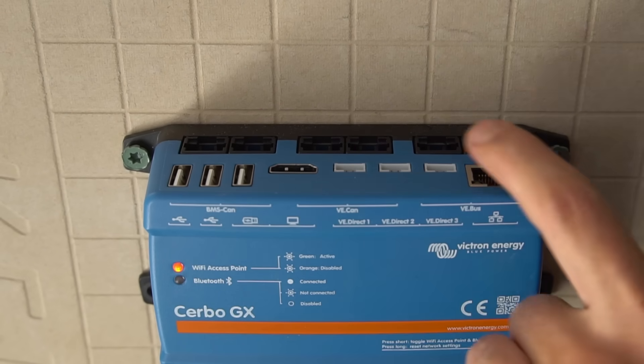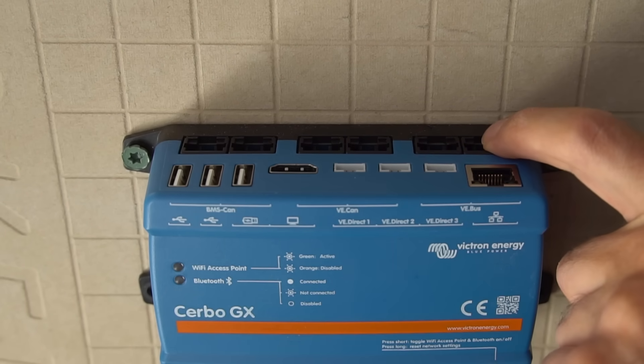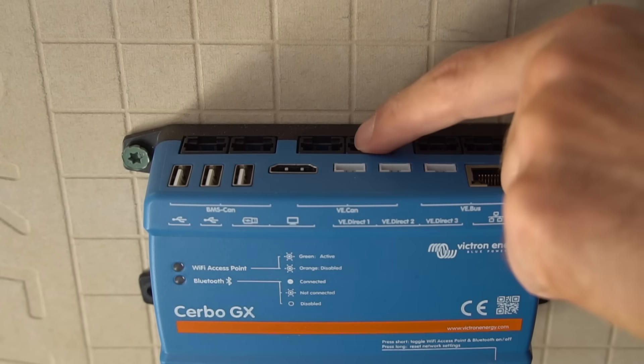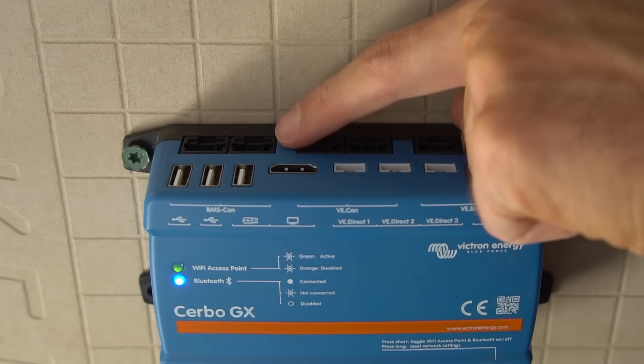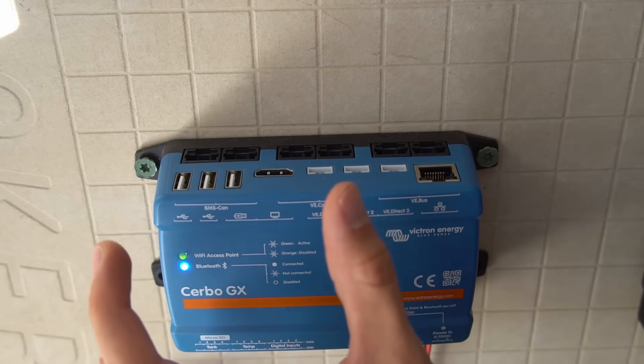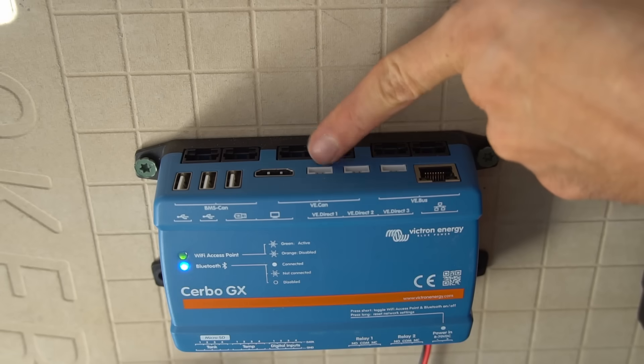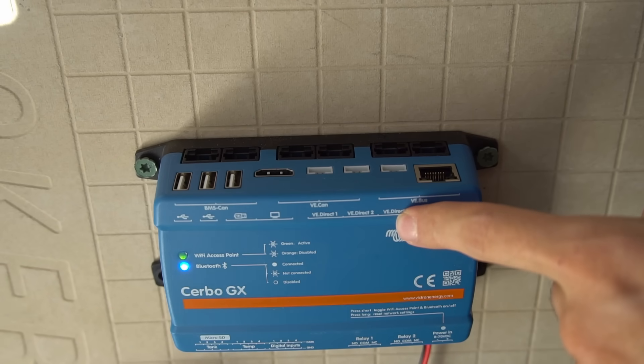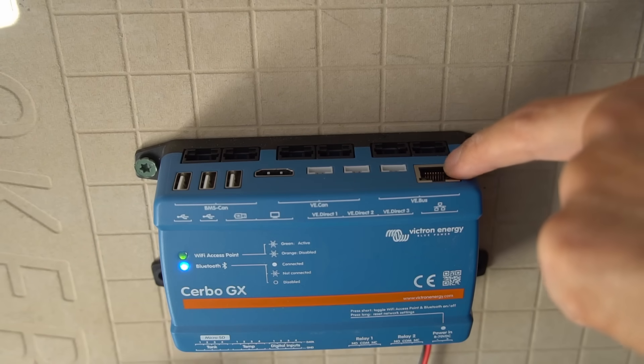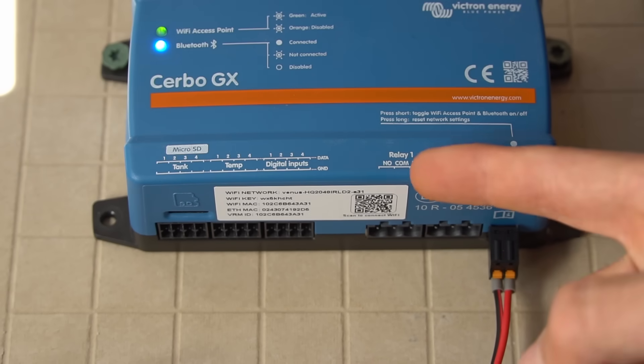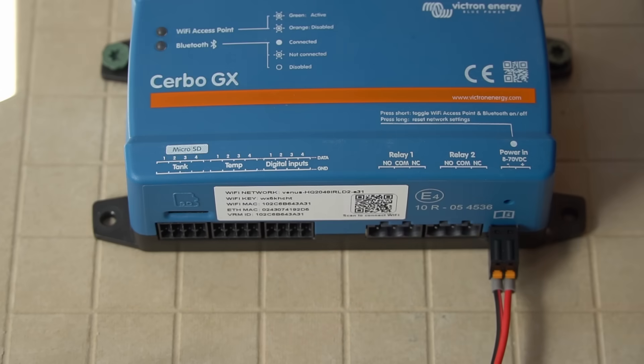Now the Cerbo GX has a lot of ports on the top and on the bottom. And over here we have the VE bus, which is a type of communication protocol for Victron Energy devices. We have the VE can, which is like a can bus. Over here we have the BMS can if you want to use a BMS system battery through Victron Energy. And then these USBs power other devices like the screen when we attach it. And the screen also connects to this HDMI port right here. And then these white ports right here are for the VE direct communication system. And again, another communication protocol for Victron Energy devices. And this is for Ethernet cable to connect to your network. And on the bottom we have two relays, digital inputs, temperature, and tank sensor inputs. And then a micro SD slot if you want to store that information.